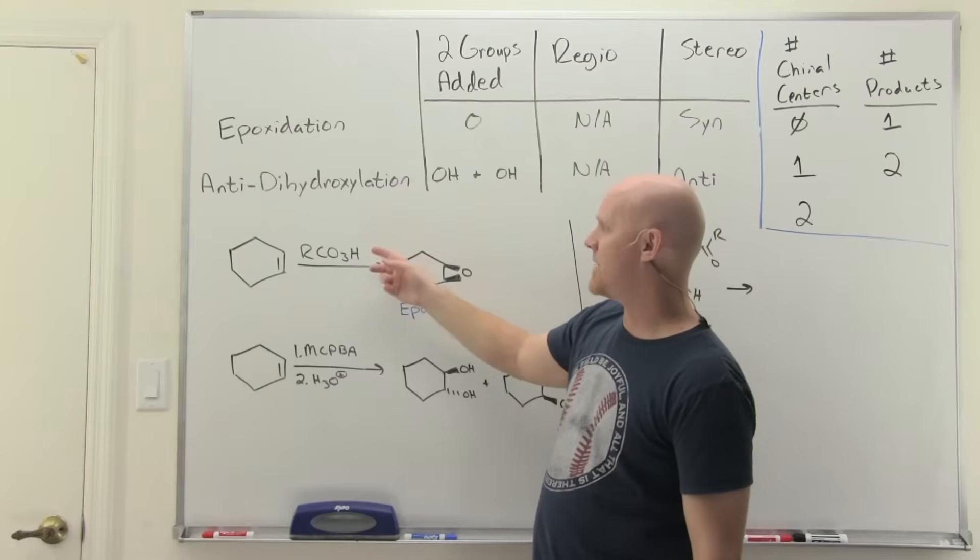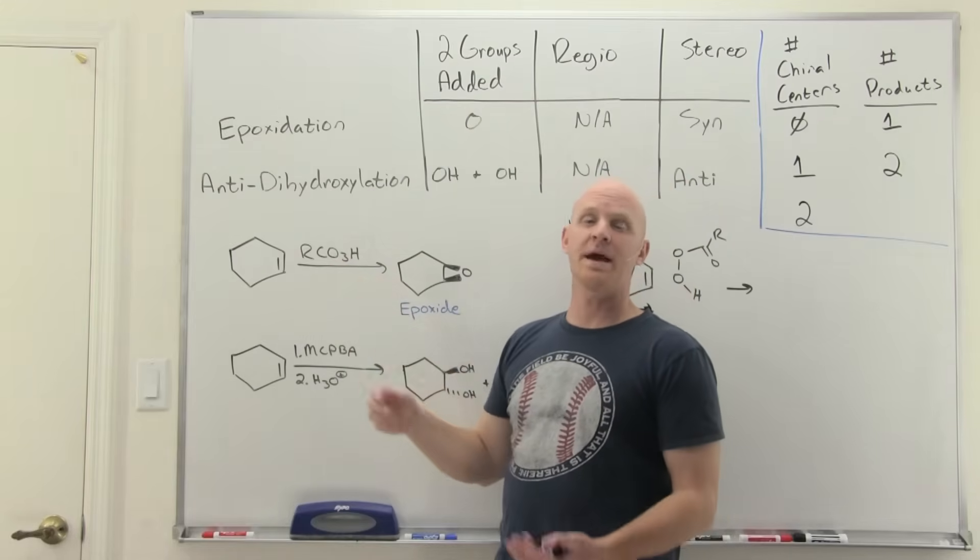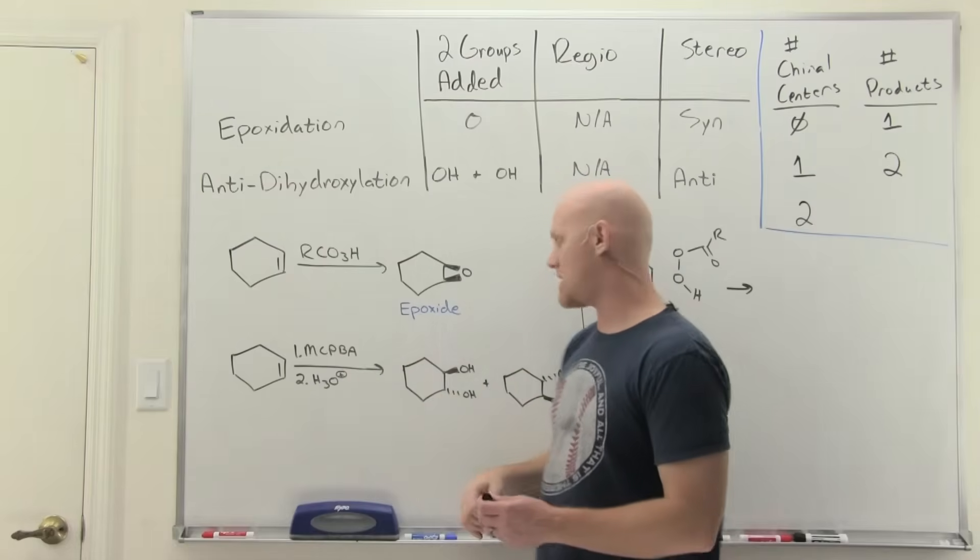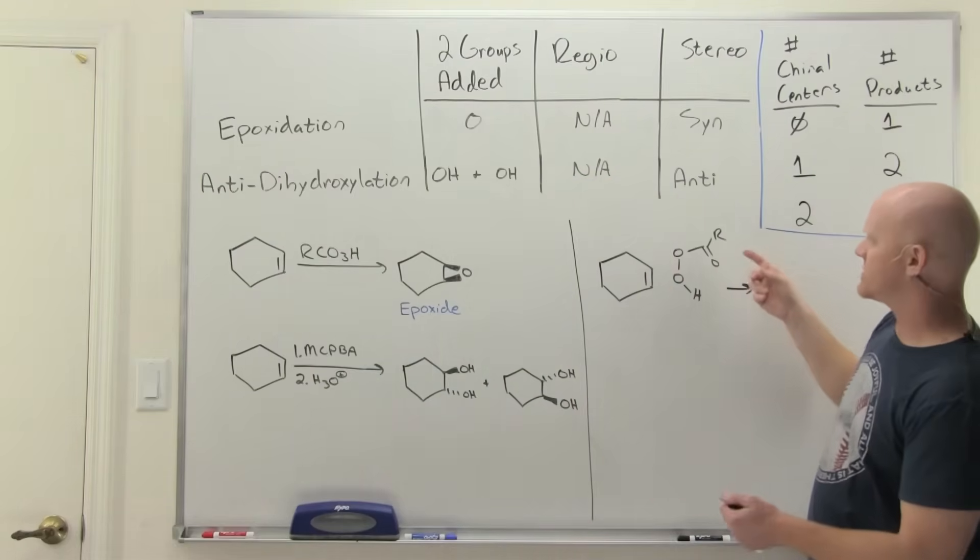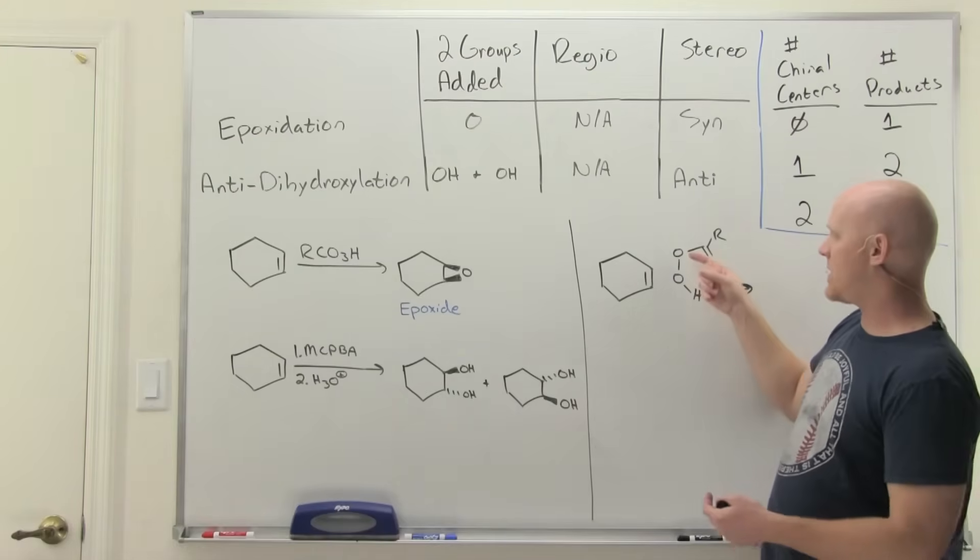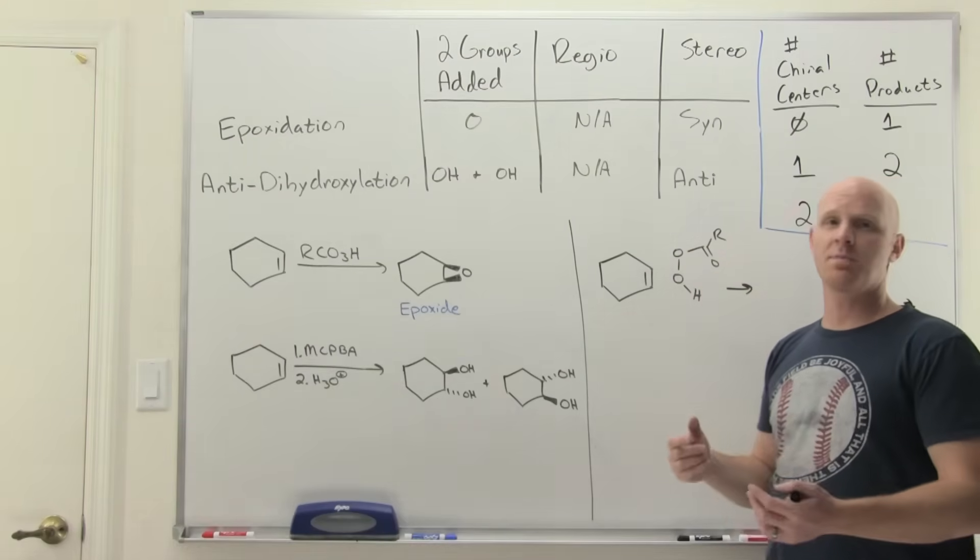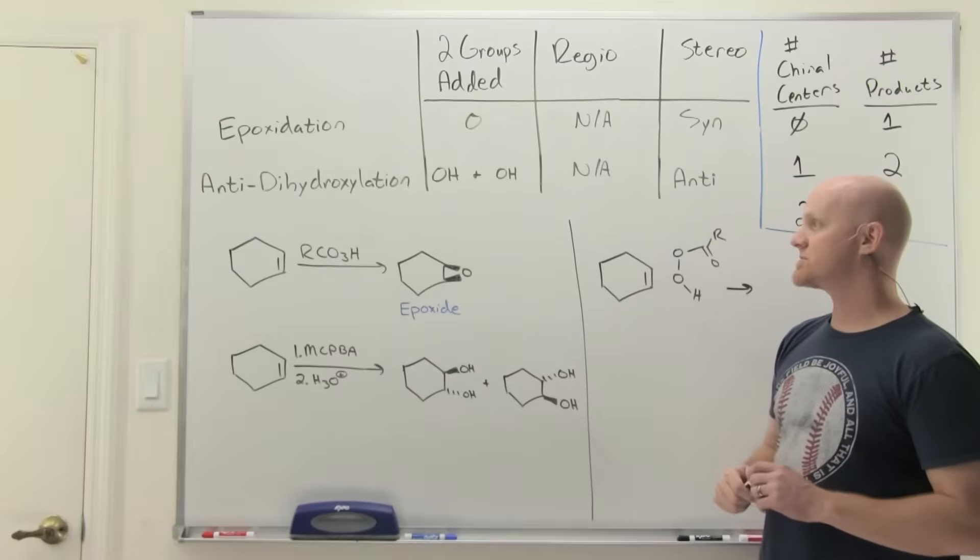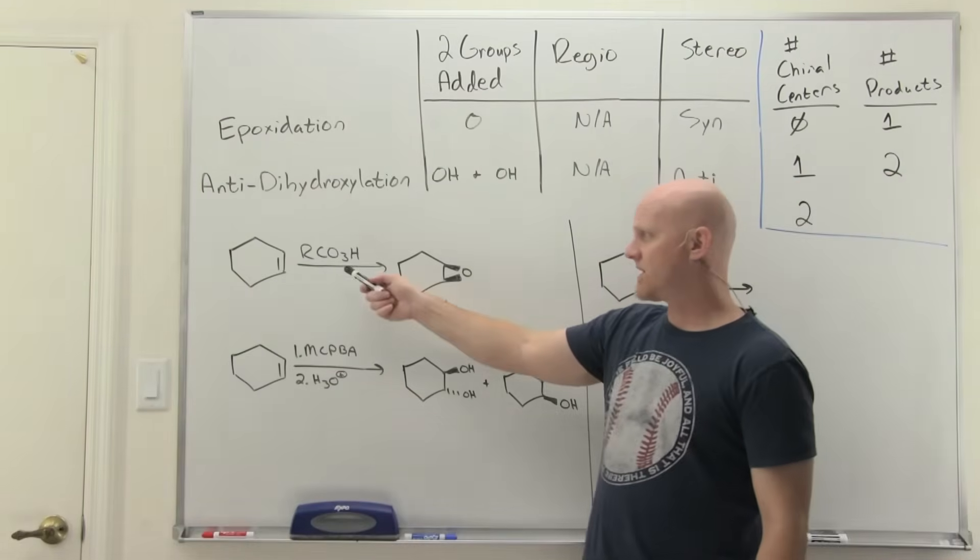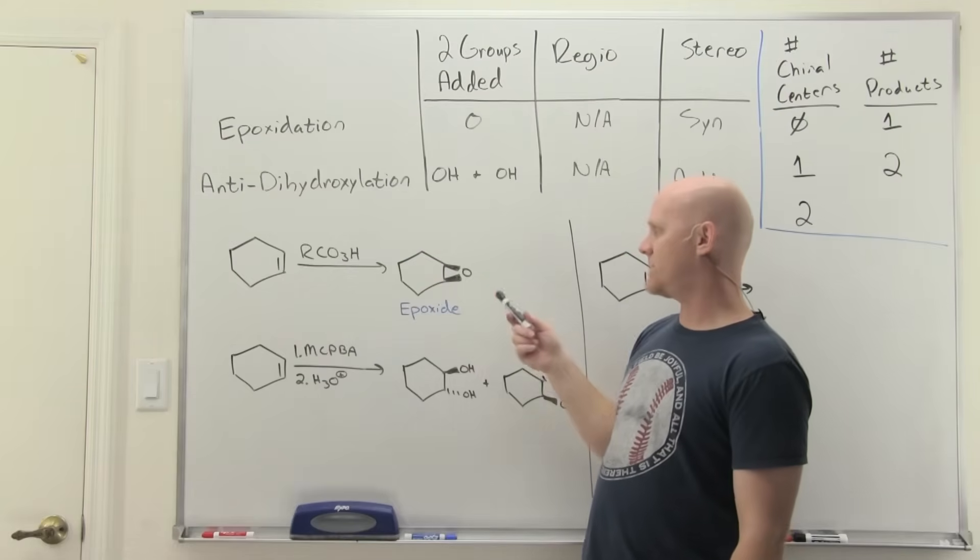The reagent here is going to be what's called a peroxyacid or simply a peracid. It kind of looks like a carboxylic acid with one too many oxygens. I've got one drawn out here. Notice it's got three oxygens here instead of normal two. And that oxygen-oxygen single bond is a rather weak bond, which governs this reaction, explaining the reactivity. If you just add a peroxy acid, you get the epoxide.